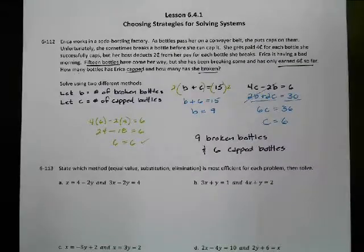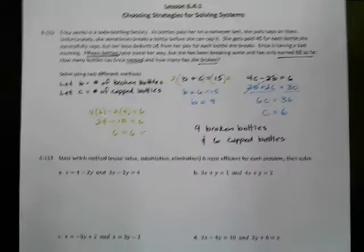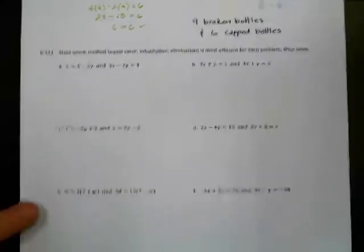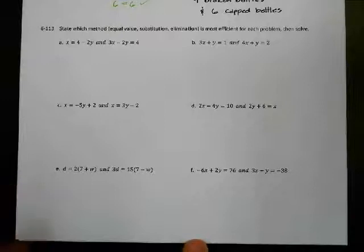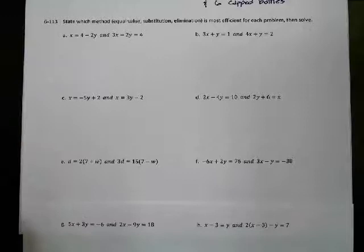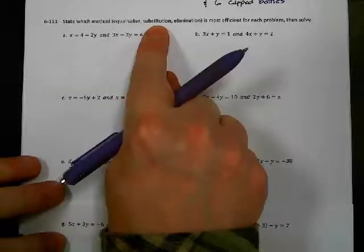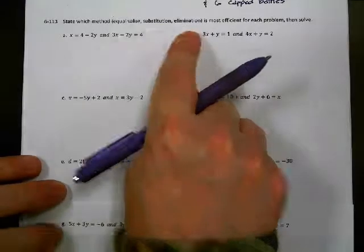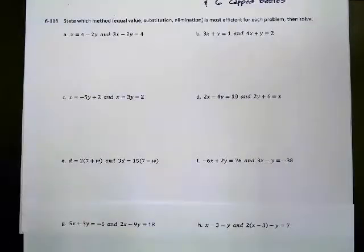All right. There you go. There's Erica working in 1910s with no child labor laws and a boss who steals money from her. All right. 6-113. So what you're supposed to do with this one is you are supposed to say which method is the most efficient, equal value, substitution, or elimination. And then you're going to solve each of them using that method. So let's look at the first one.